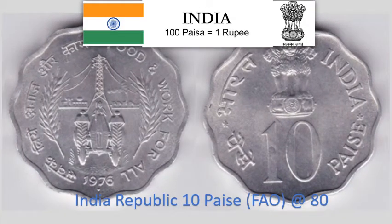India Republic 10 Paise 1976 — Circulating Commemorative Coin, FAO Planned Families, Food for All — Food and Work for All. 2.3 gram Aluminium scalloped coin with 12 notches, 26 mm diameter. Krause Reference No. 30. Approximate market value Rs. 80.